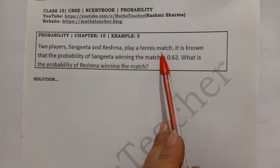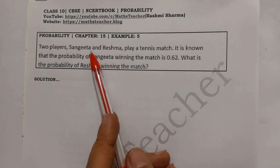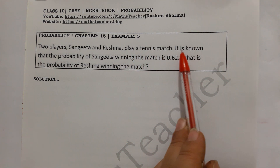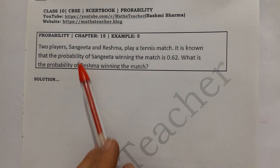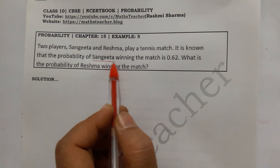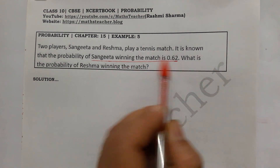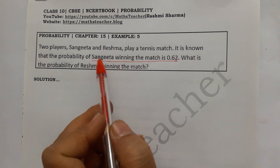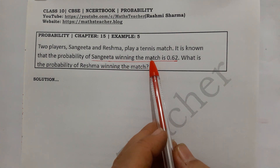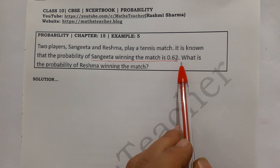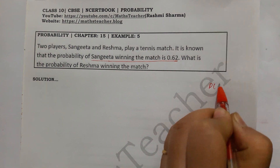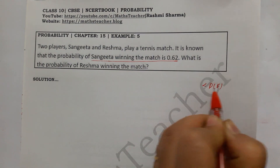Two players, Sangita and Rashma, are playing a tennis match. It is known that the probability of Sangita winning the match is 0.62. So what is given here is that the probability of Sangita winning the match is 0.62.